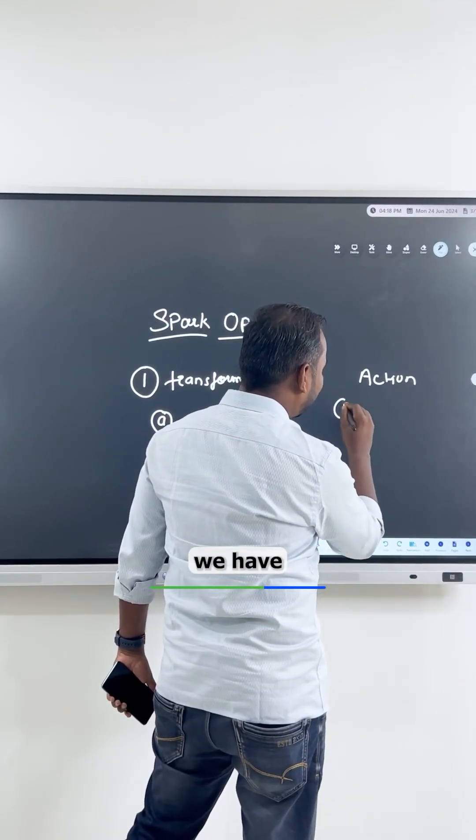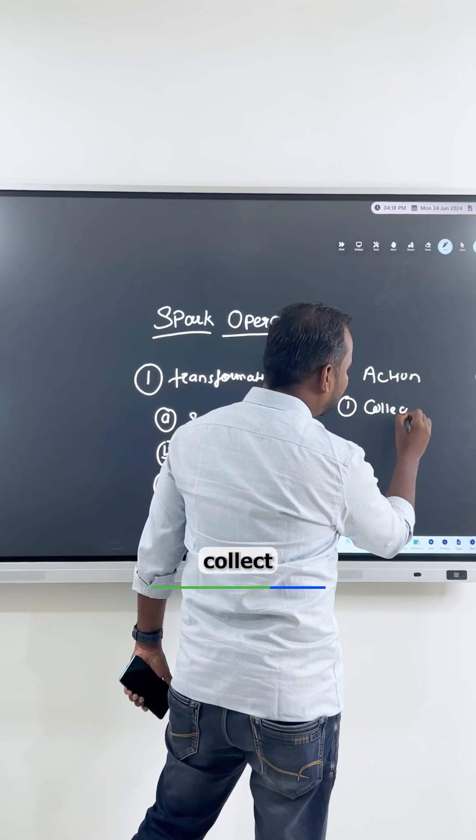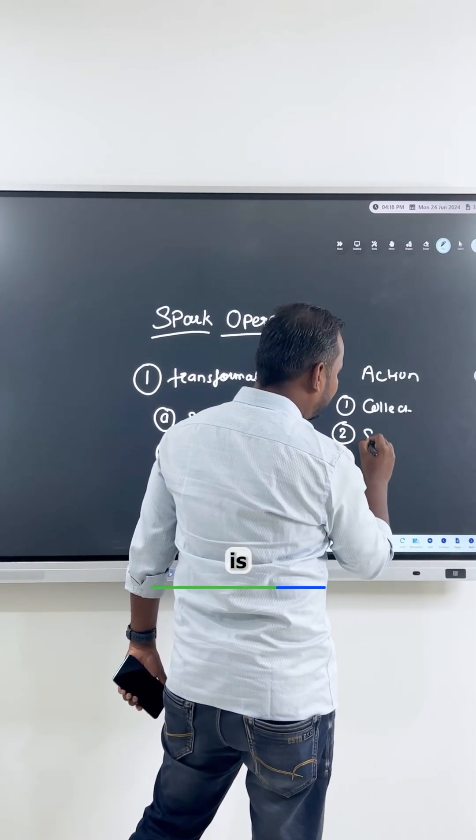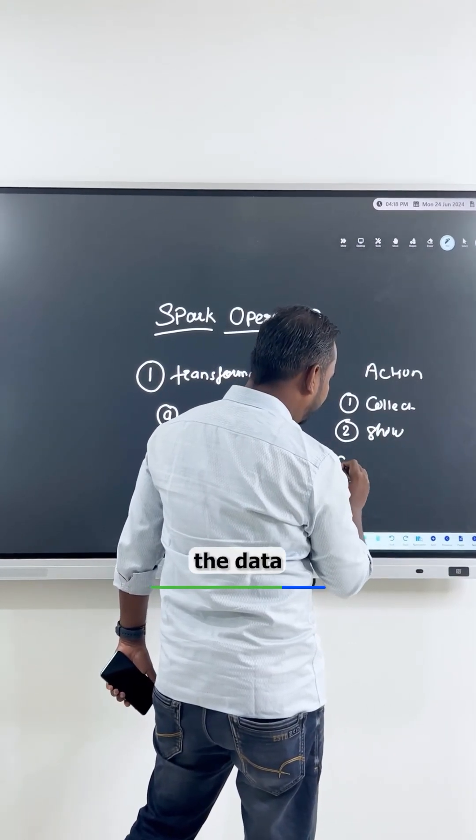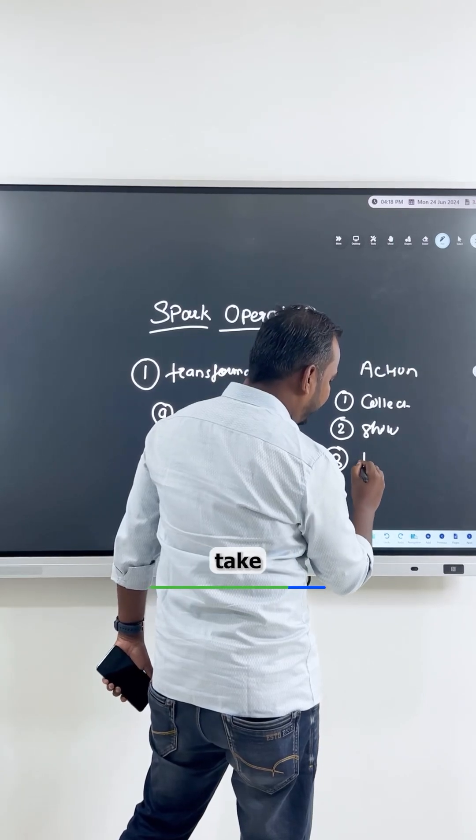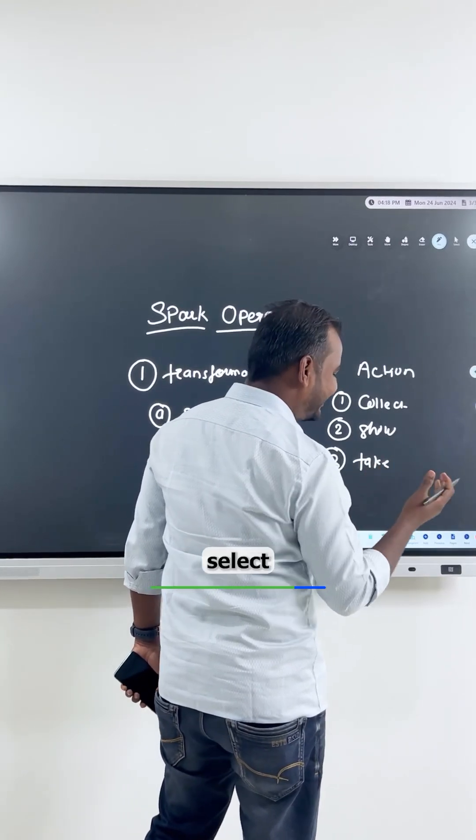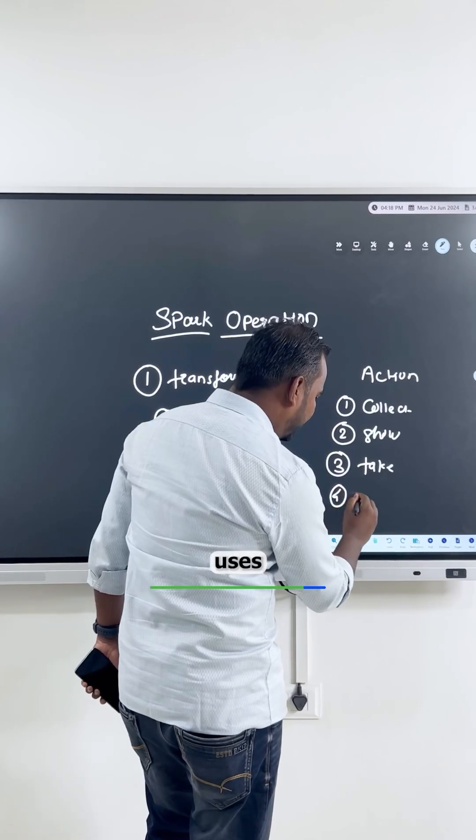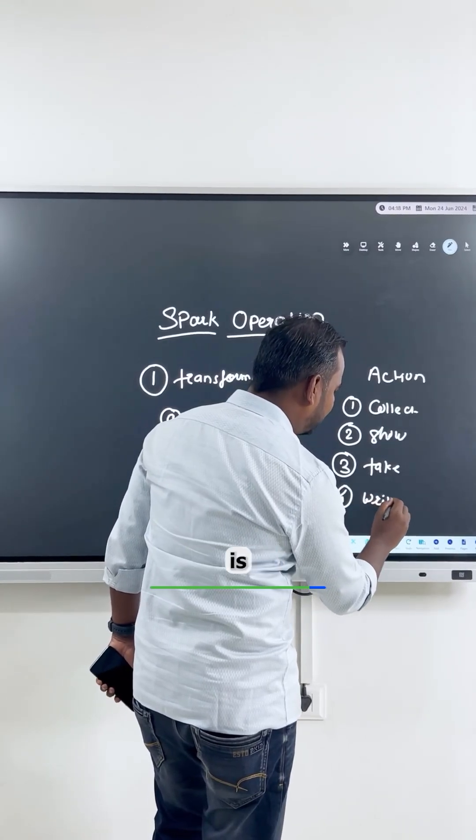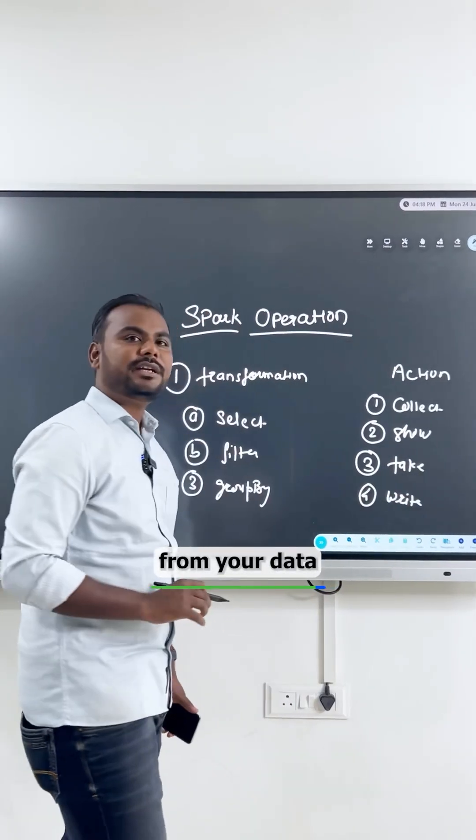In actions, we have collect, show which is mainly useful when you want to display the data, and then we have take, let's say you want to select some of the data, and the most widely used is write operations which is to write down the data from your data frame.